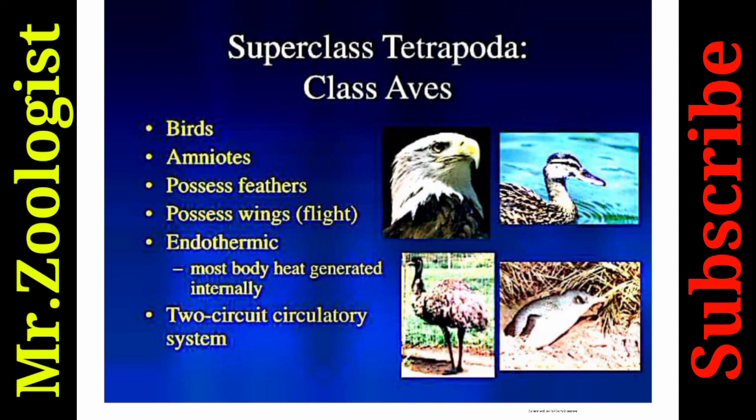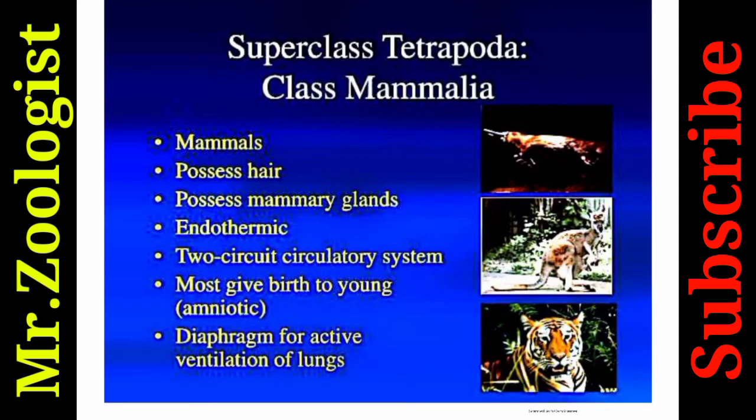Class Aves includes birds. They are amniotes that possess feathers and wings modified for flight. They are endothermic — most body heat is generated internally — and have a two-circuit circulatory system. Class Mammalia includes mammals: animals that possess hair and mammary glands, are endothermic, and have a two-circuit circulatory system.